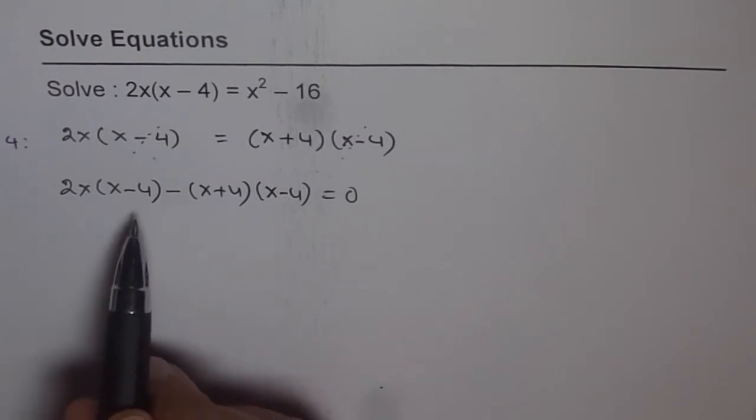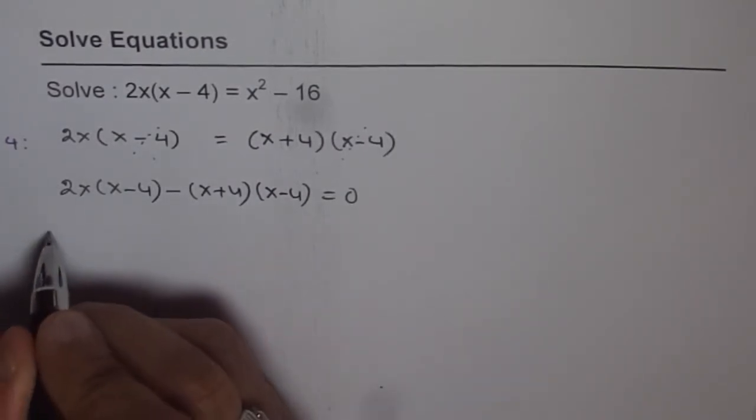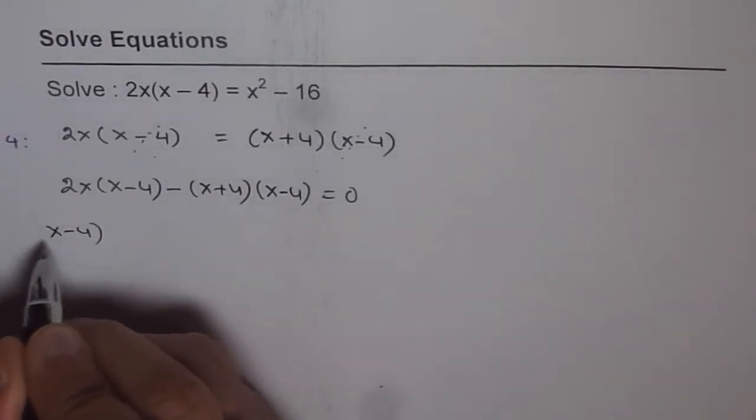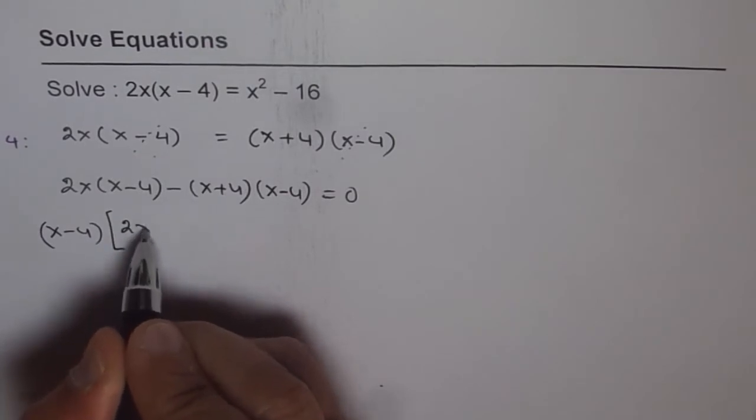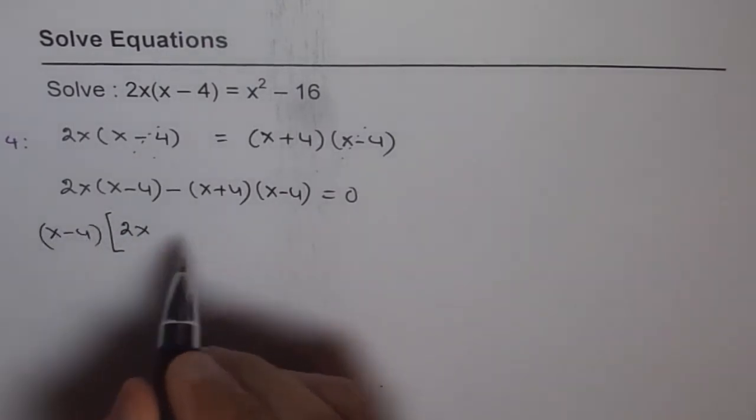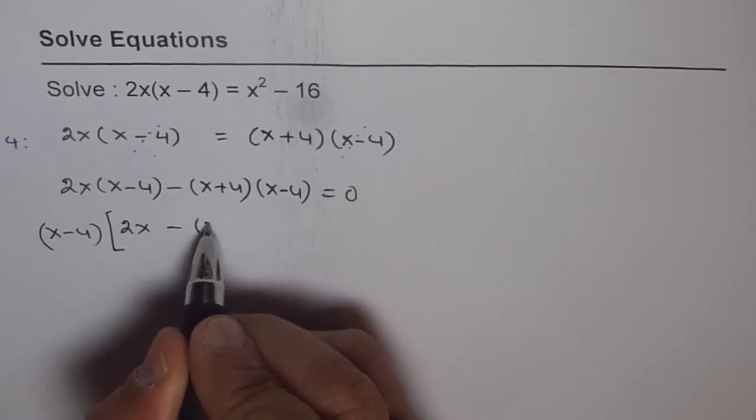Now at this stage, it is a good practice to take x minus 4 as a common factor and then solve the rest of the equation. So we will take x minus 4 as a common factor and what remains on this side is 2x from the first term and from the next term we have x plus 4.